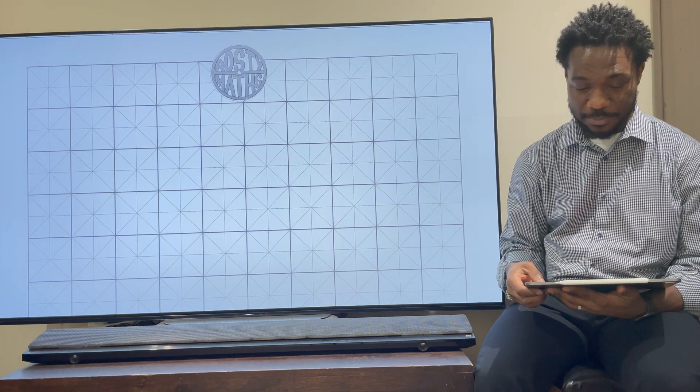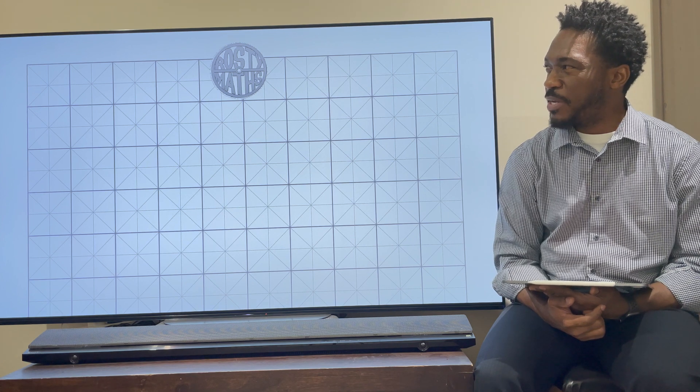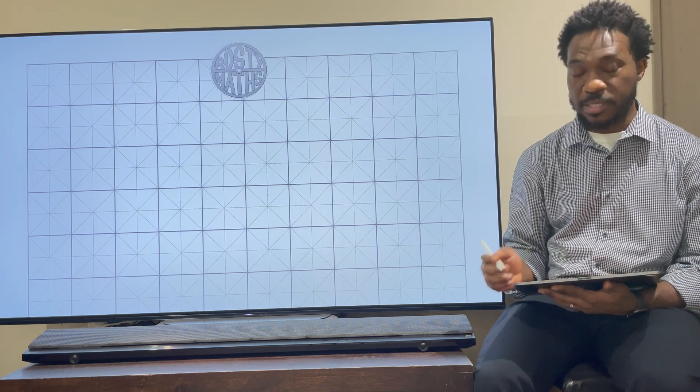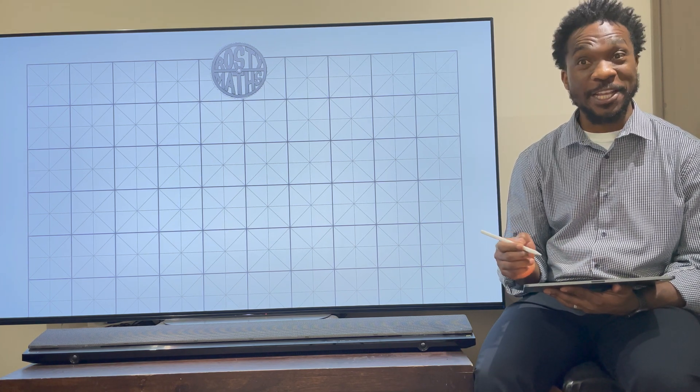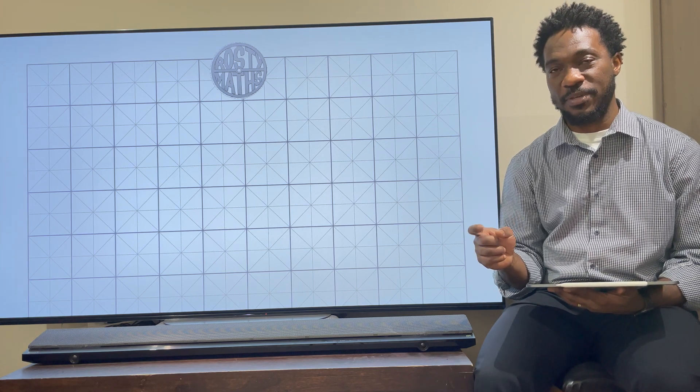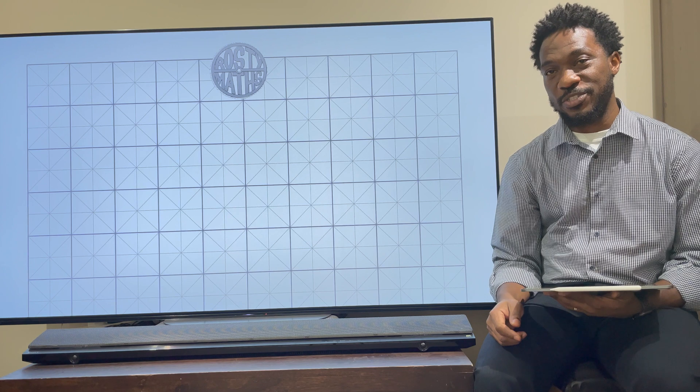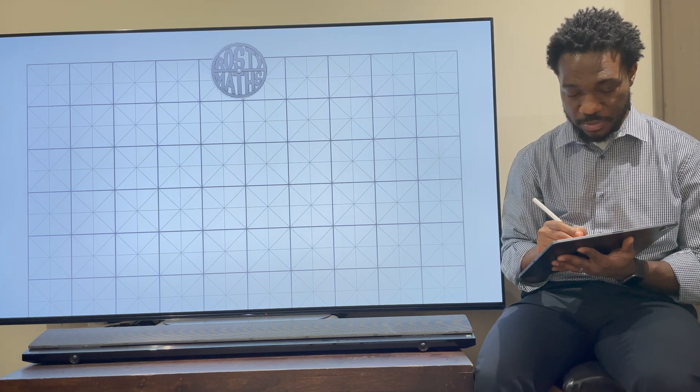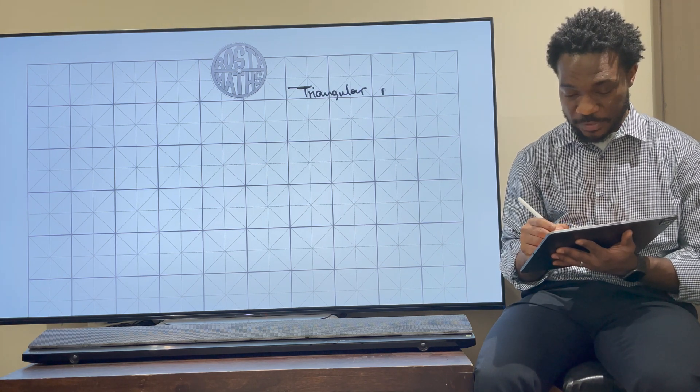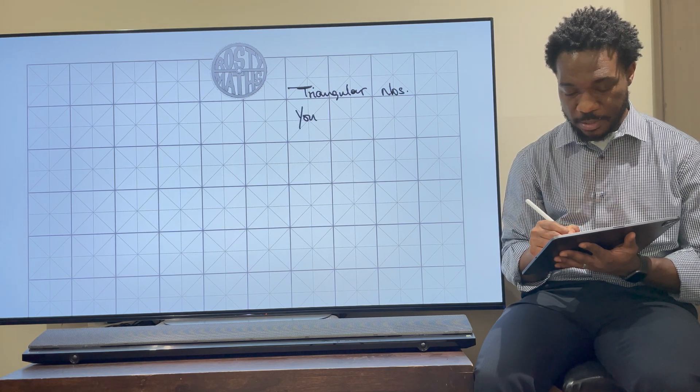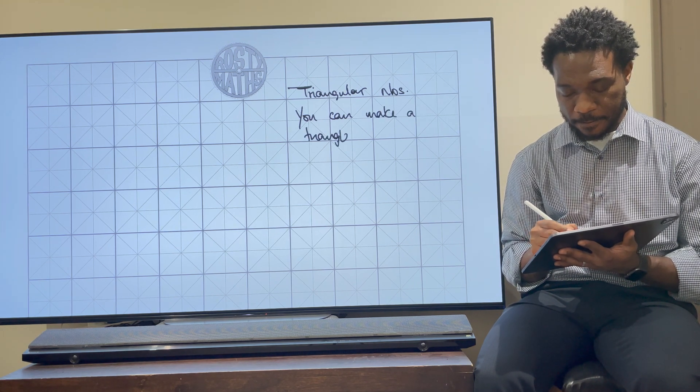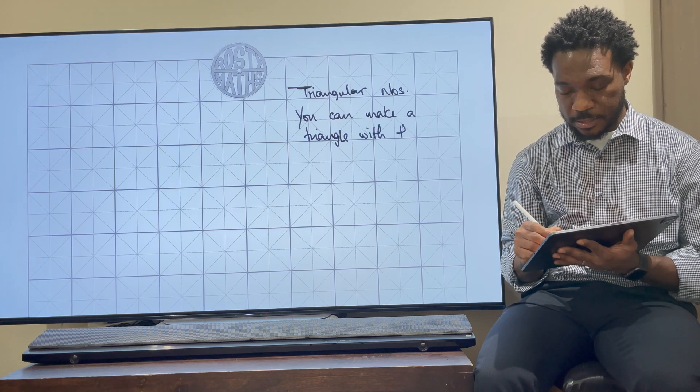There we go, there's my template right there. Now you might be wondering what are triangular numbers and why are they so important. Well, simply put, triangular numbers are numbers that you can make a triangle with. If you remember, my square numbers are numbers you can make a square with. If you didn't watch that video, click on the pop-out banner up here to go and watch that video on square numbers. But this time I am going to do triangular numbers. I'm going to write: you can make a triangle with these numbers.